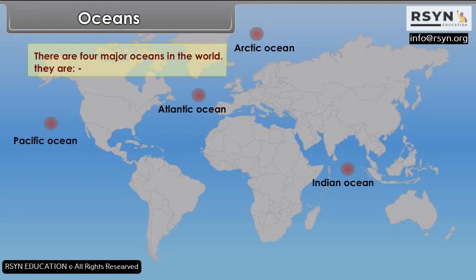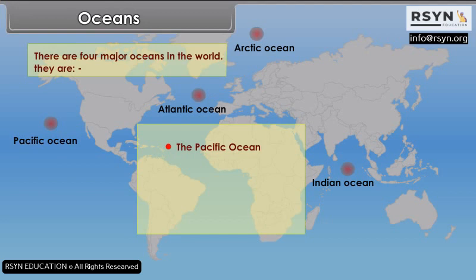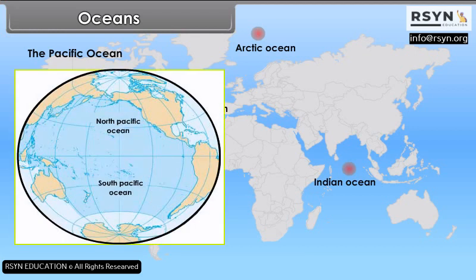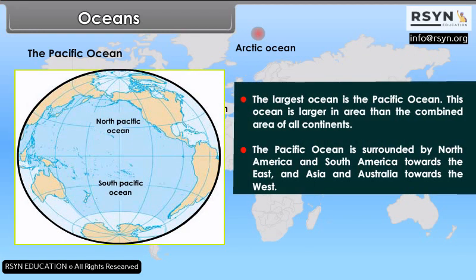There are four major oceans in the world: the Pacific Ocean, the Atlantic Ocean, the Indian Ocean, and the Arctic Ocean. The Pacific Ocean is the largest ocean. This ocean is larger in area than the combined area of all continents. The Pacific Ocean is surrounded by North America and South America towards the east and Asia and Australia towards the west.